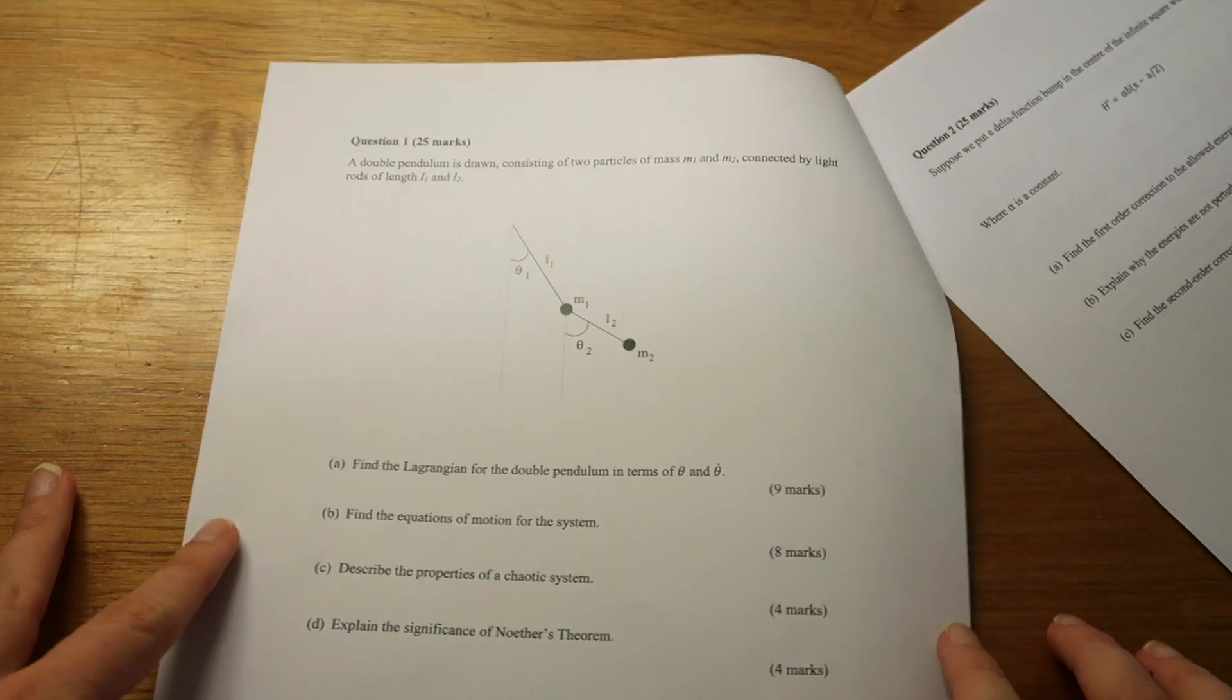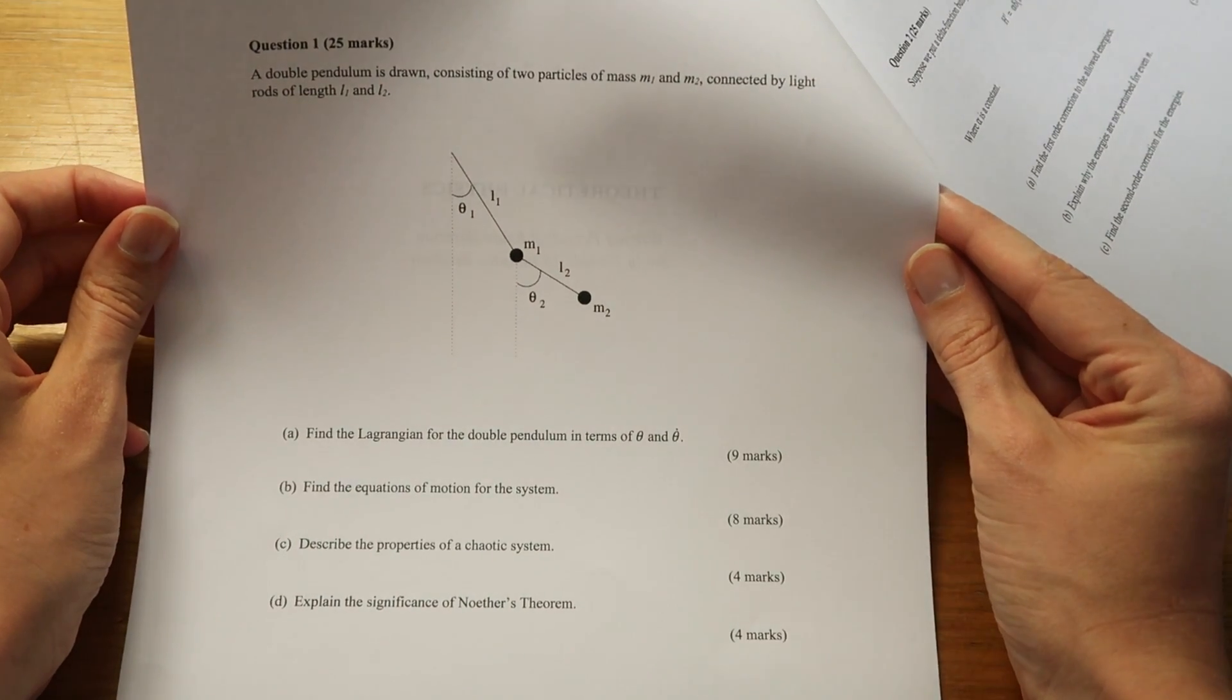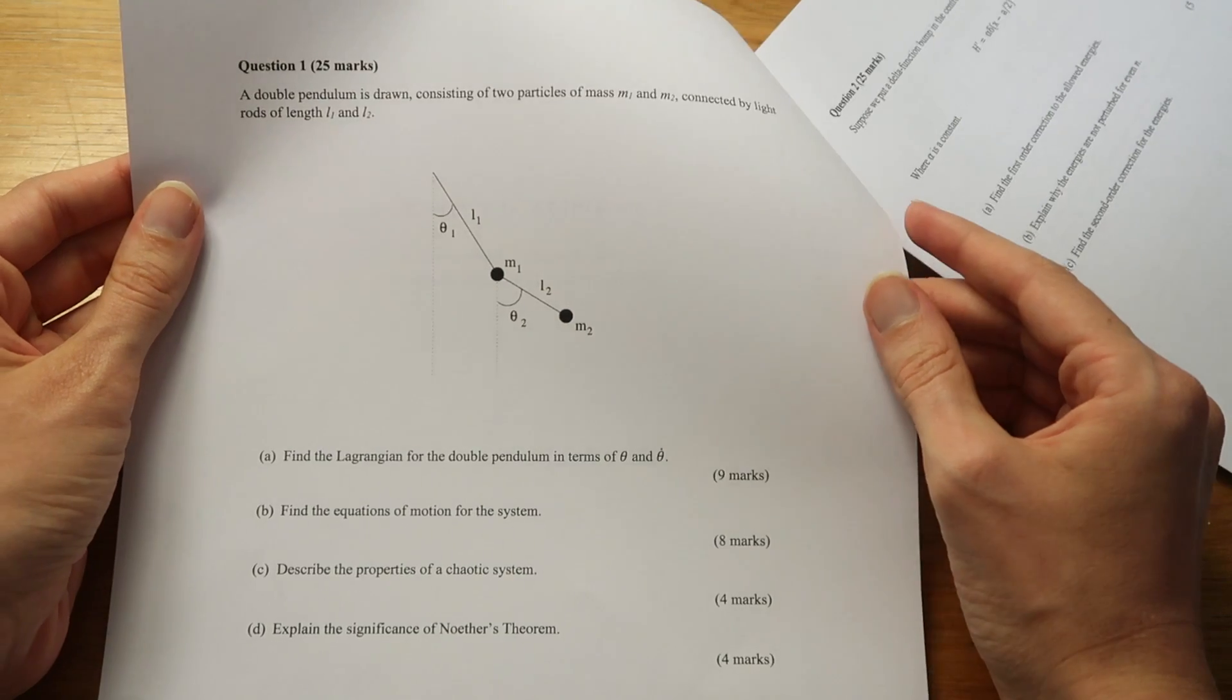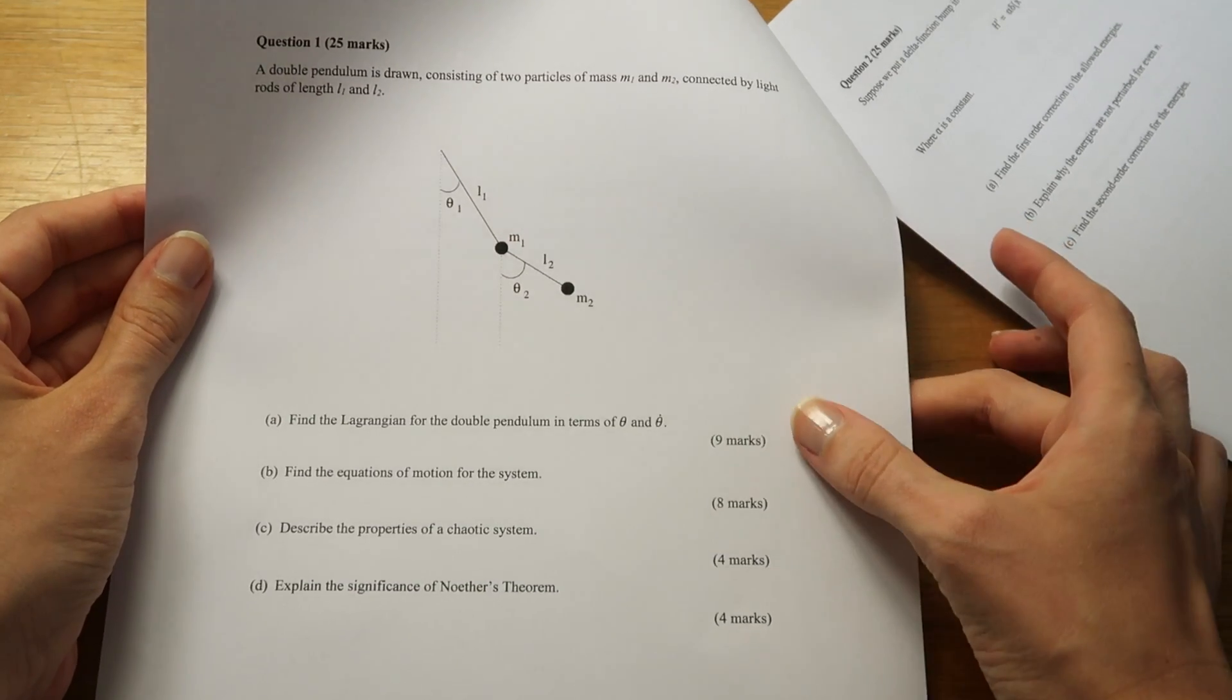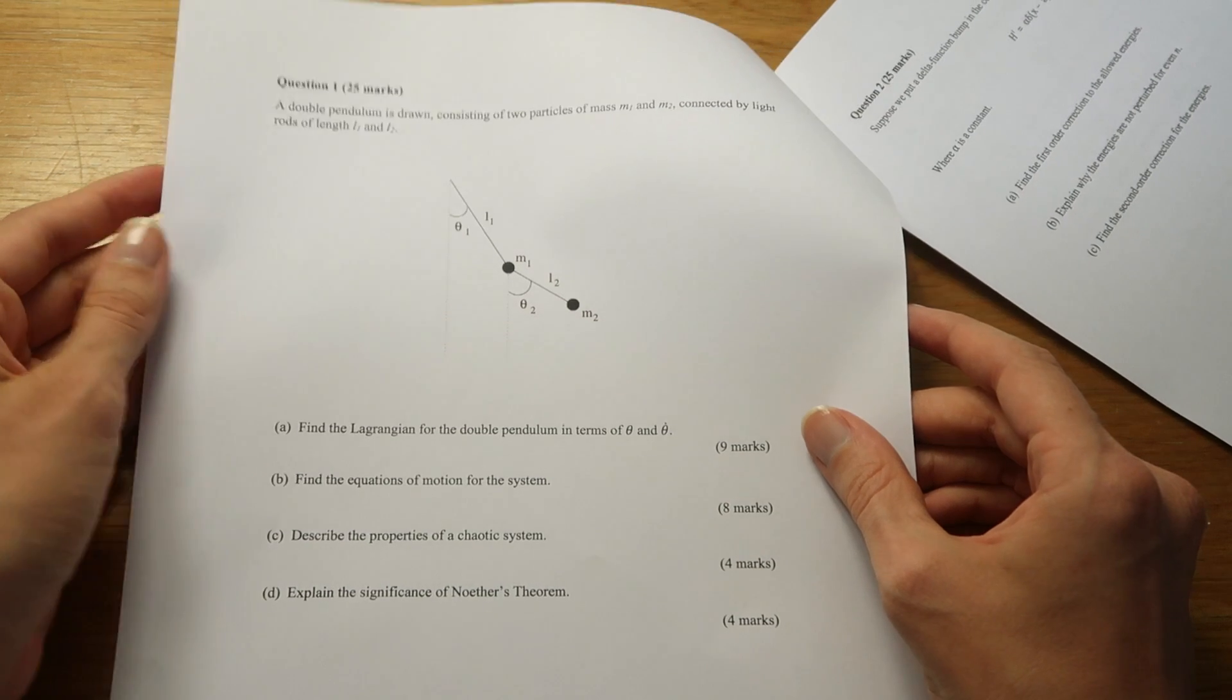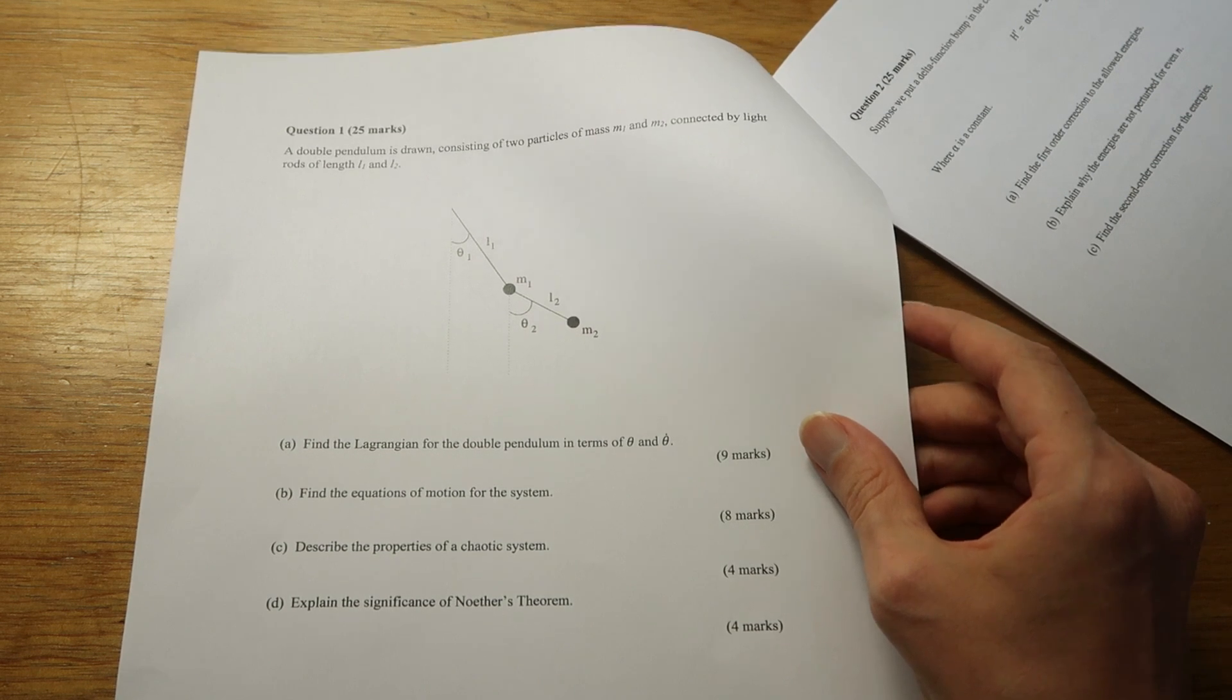First up we're going to have a classical mechanics problem and this is one that deals with a Lagrangian. So we've actually got a double pendulum here and this is probably a bit of a typical problem. So you're given a double pendulum and you're asked first of all to find the Lagrangian. So that's essentially a way of finding out how to describe the system when the system is quite complicated.